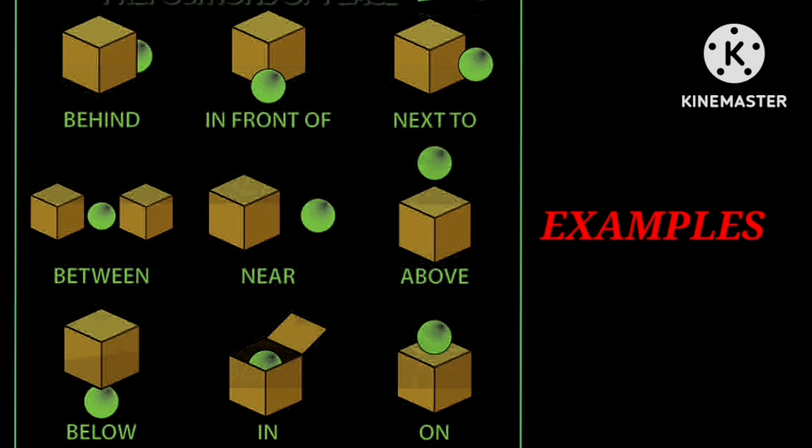Next hum dekhate hai: 'between' means beech me. 'Near' means paas me — agar koi cheez paas me, hum usko boltay hai 'near'. 'Above' means upar — jo upar hai, wo touch nahi ho rha hai. 'Below' means neeche, but touch nahi ho rha hai. 'In' means andar, 'on' means upar. On aur above me difference dekhen — on me jo object hai, wo touch ho rha hai, and above me nahi ho rha hai.